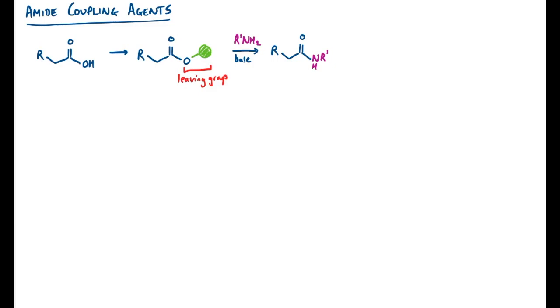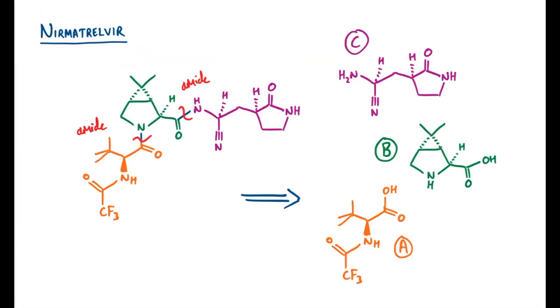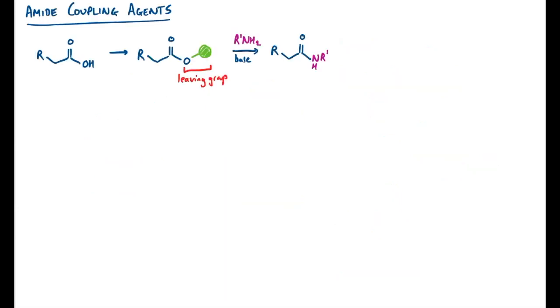Now if we look back on the nirmatrelvir structure itself, and our components A, B, and C, we can certainly see in A and B that they have an alpha stereocenter next to their carboxylic acid. So any route involving an acid chloride risks scrambling those stereocenters, so we're going to have to use this route using coupling agents in our synthesis. There are three major players in this space.